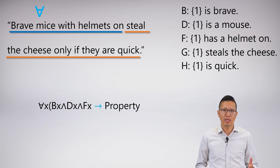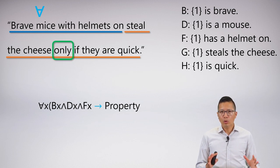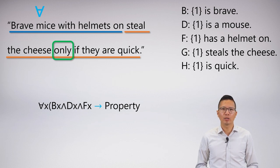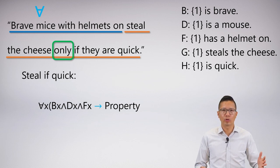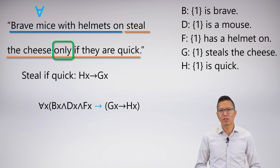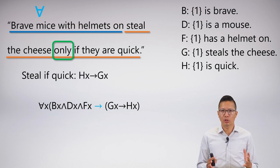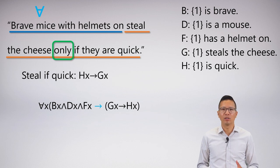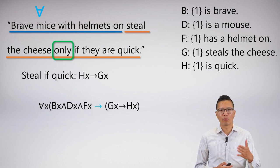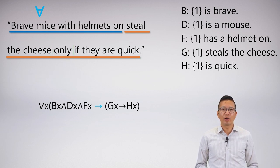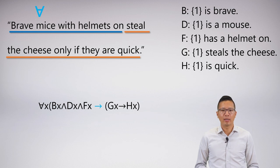Now I want to focus on the property: 'steal the cheese only if they are quick.' There's a critical word here — 'only' — which you are very familiar with. I'm going to first symbolize 'steal if quick,' ignoring 'only,' and get HX arrow GX. Now to symbolize with 'only,' we know that swaps the antecedent and consequent, so I get GX arrow HX as my property. Notice that my property itself is also a conditional — that's fine, it can be anything we want, as long as we preserve the main connective, which is the conditional separating the group from the property. We just need to close the parentheses of the scope of the universal, and that is the final symbolization.